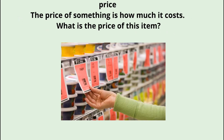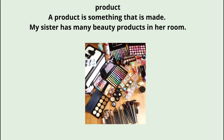Price. The price of something is how much it costs. What is the price of this item? Product. A product is something that is made. My sister has many beauty products in her room.